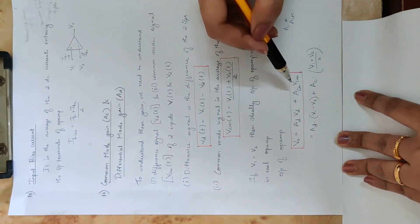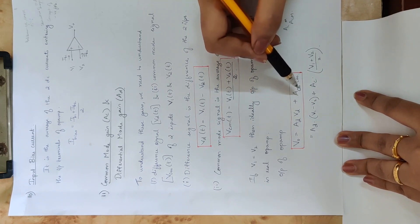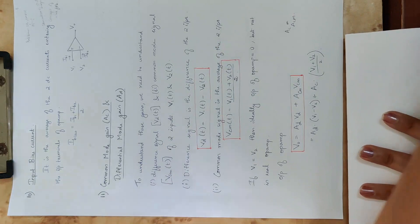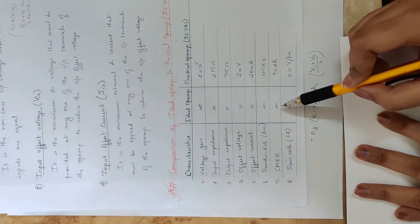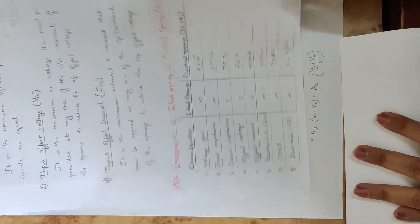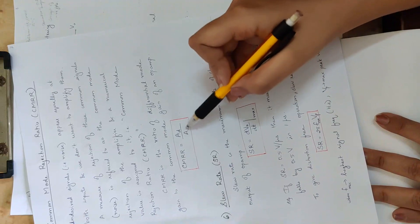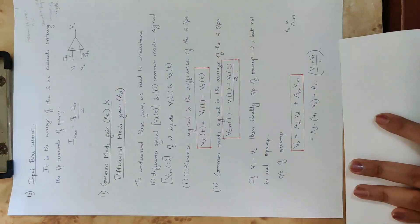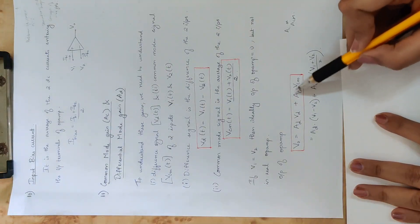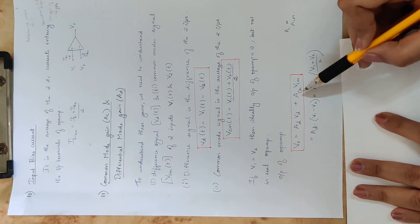In the practical case, we use both the common mode voltage and the common mode gain. We define CMRR (Common Mode Rejection Ratio) as AD divided by ACM. In the ideal case, ACM is zero, so CMRR is infinity. In the practical case, ACM is non-zero, which affects the output of the op-amp.